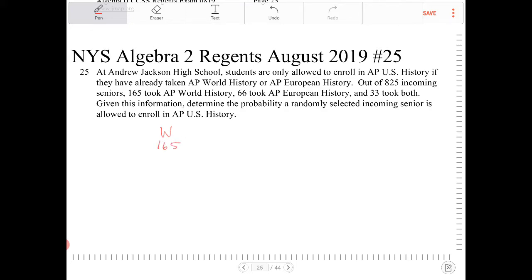66 took European History. So European, there are 66 of them. And 33 took both. So both of them. So W and E took 33. Oh, and there's a total of 825 altogether.